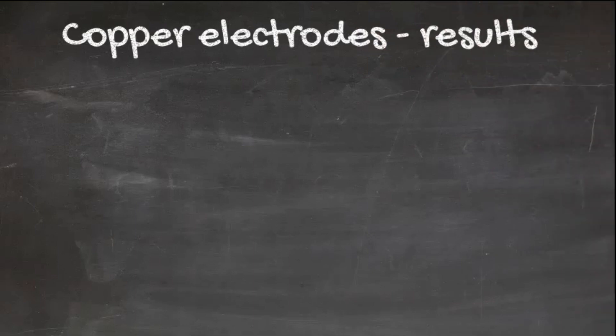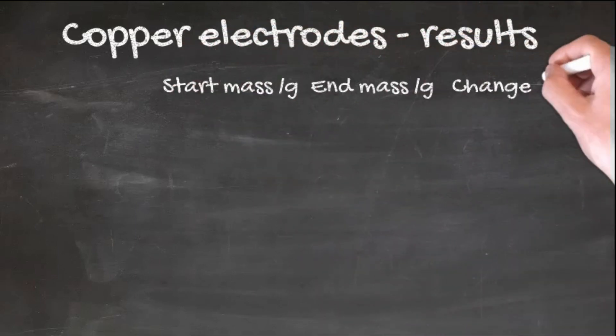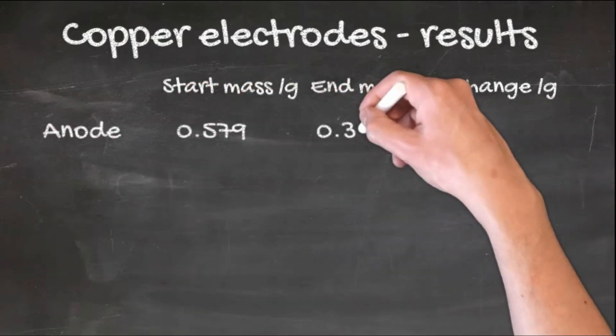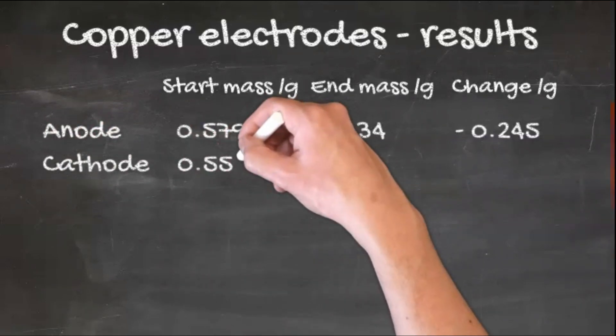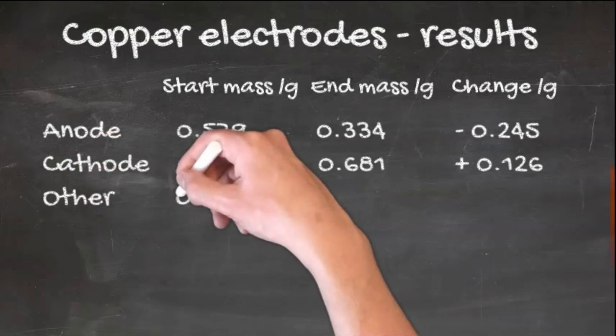So, here are the results using the copper electrodes: the loss at the anode, the gain at the cathode, and the copper deposited in the beaker itself.